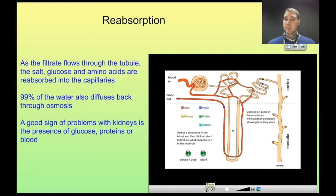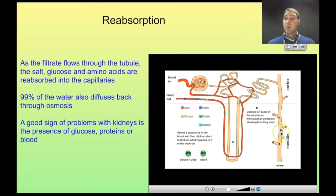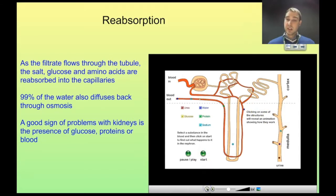As they go into the collecting duct, we have some more water being reabsorbed. What passes through as urine is our urea — the waste product we're trying to get rid of — along with some water and some of the salt that was filtered through.